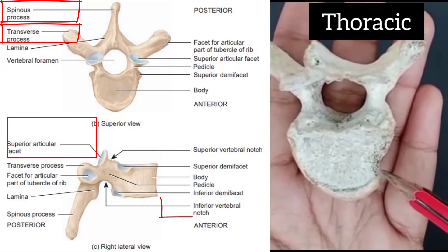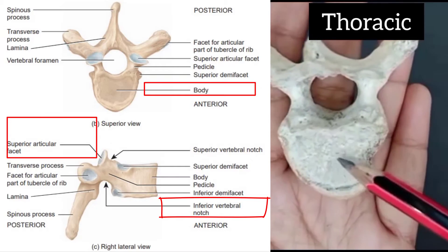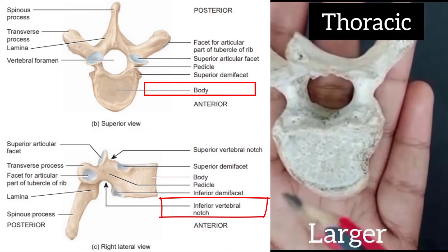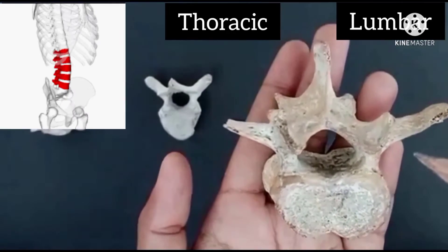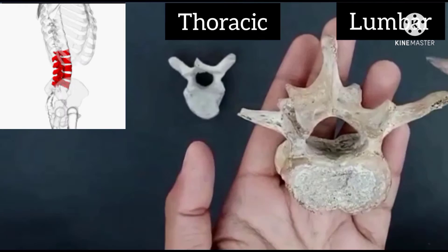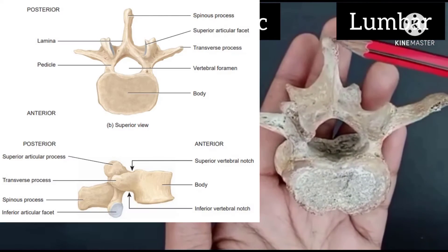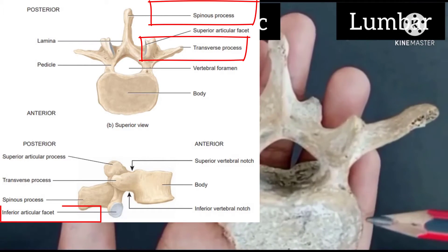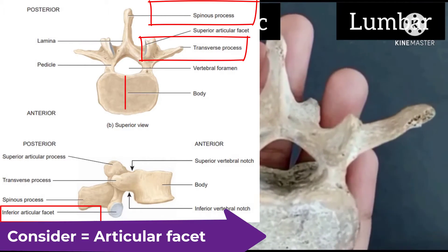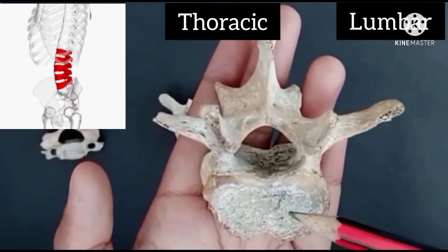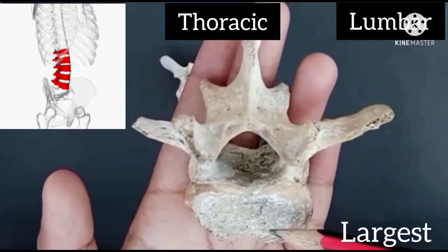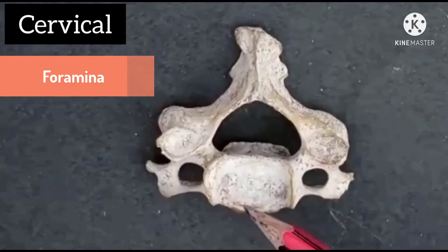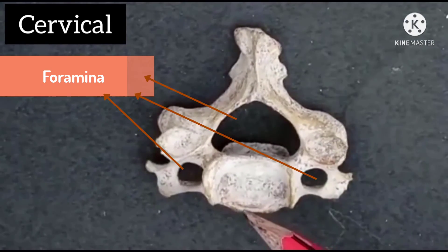The parts of the thoracic bone are: spinous process, transverse process, superior, inferior articular process, and body. Its body is larger than the cervical bone. The parts of the lumbar bone are: spinous process, transverse process, articular process, and body. This bone is the largest among them.